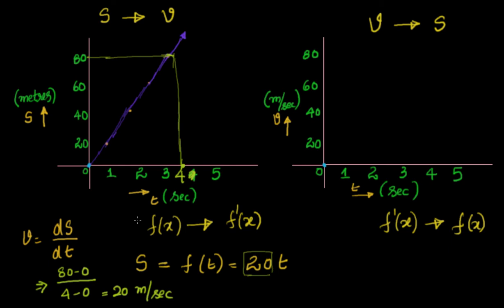The slope of the line is equal to the velocity. This is a theoretical, simple scenario where velocity is constant — no acceleration involved. So v = 20 m/s. By knowing the distance and time we calculated velocity. What we have done is v = ds/dt — the difference in distance divided by the difference in time — and that is differentiation.